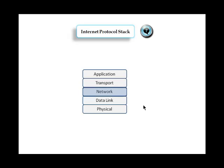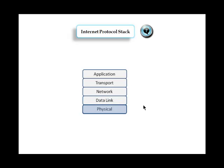In the data link layer, we have protocols such as PPP, OSPF, and ARP. The physical layer is the medium where data is transported. The link can be wired or wireless, and information travels in the form of ones and zeros, which are referred to as bits.